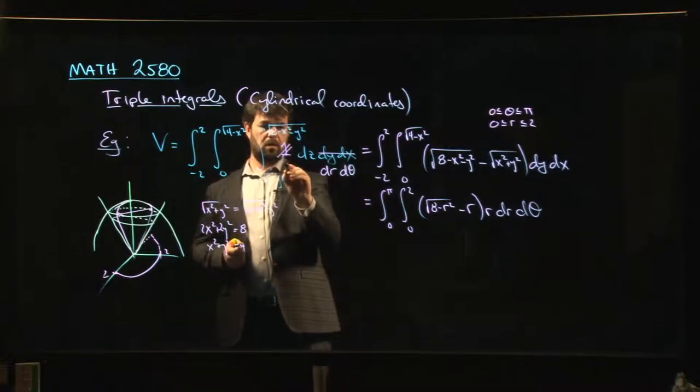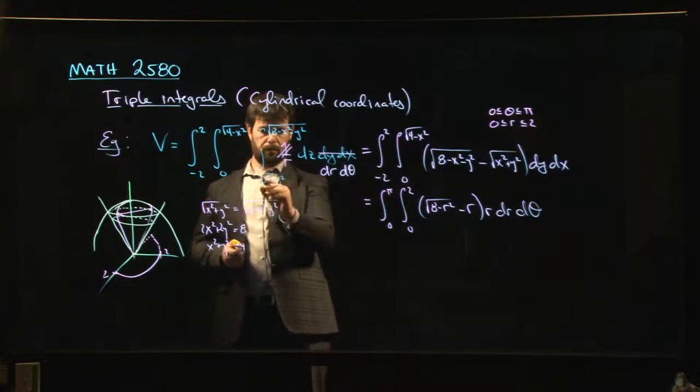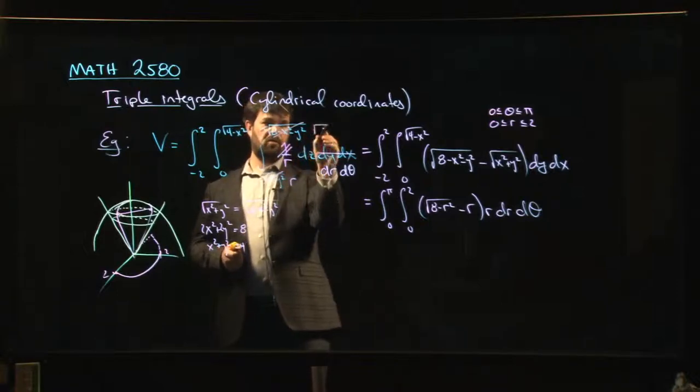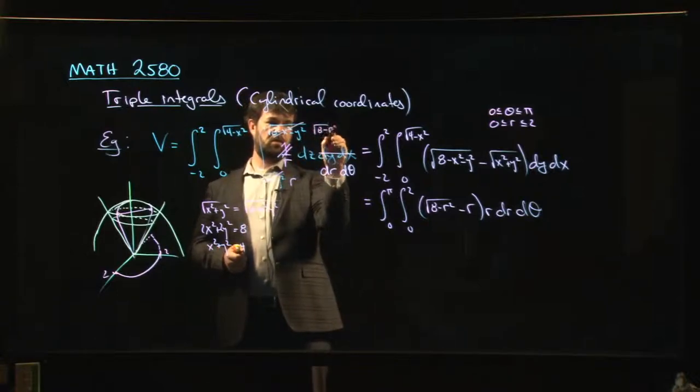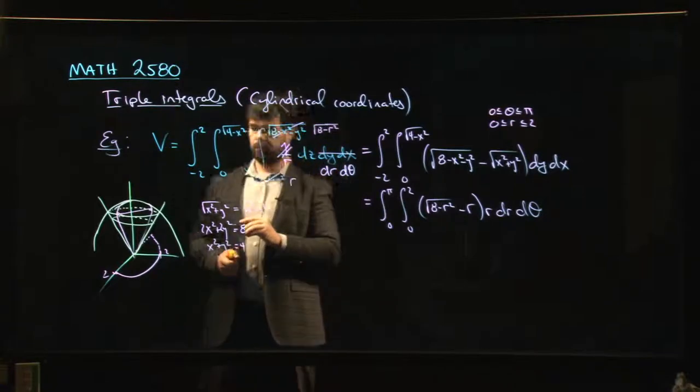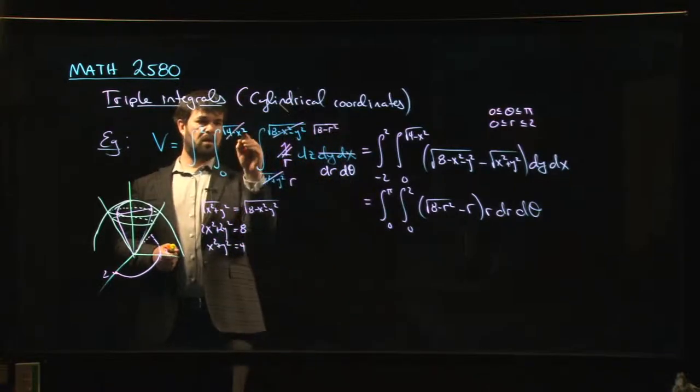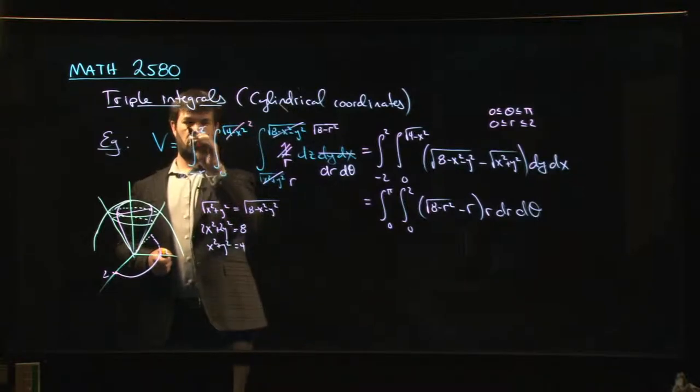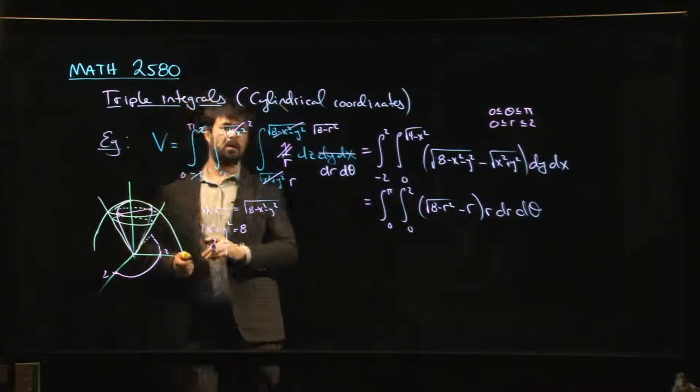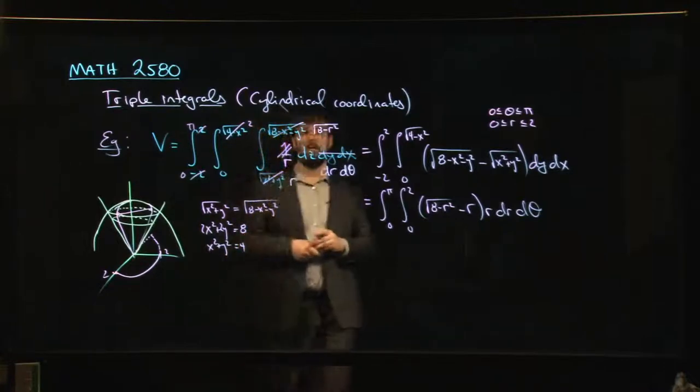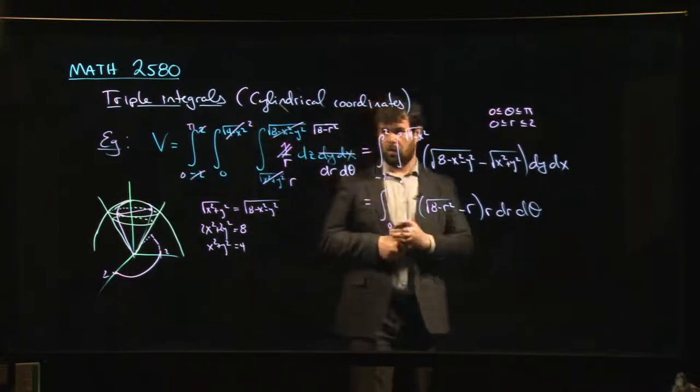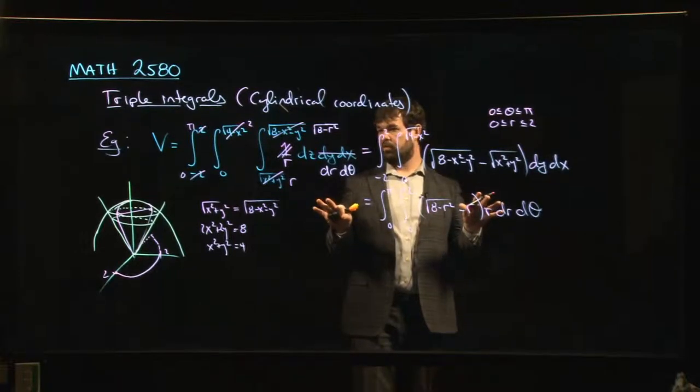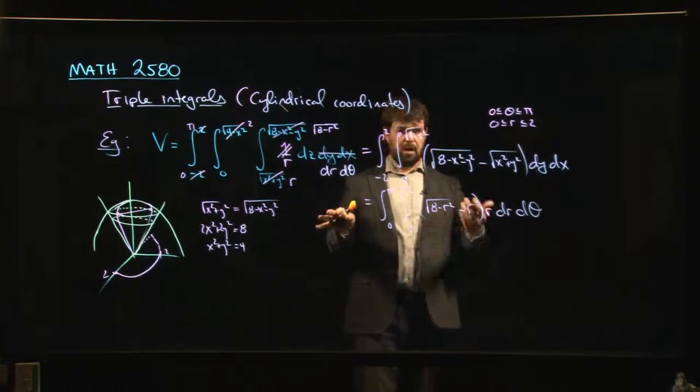This becomes r, this becomes root eight minus r squared. Over here that becomes a two, zero, pi. And now you're doing the integral in what's called cylindrical coordinates.